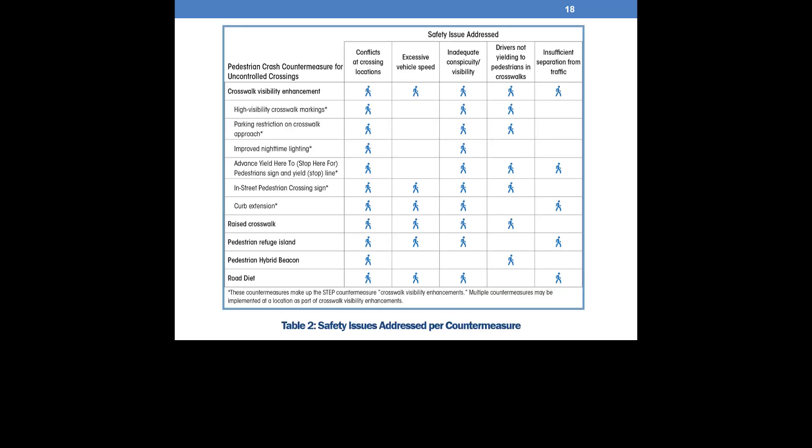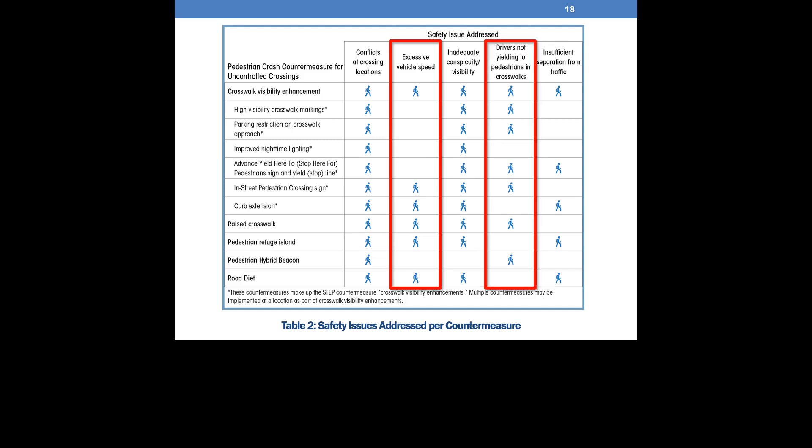Table 2 helps you find potential countermeasures based on the specific safety issues at the uncontrolled crossing. To use the table, find the safety issue you would like to address at the top of the table. Issues include conflicts at crossing locations, excessive vehicle speed, inadequate visibility or conspicuity, drivers not yielding to pedestrians and crosswalks, and insufficient separation from traffic. Each cell with the pedestrian icon beneath the safety issue corresponds to a countermeasure listed on the left that addresses that issue. To address multiple safety issues, find the rows where both issue cells have icons. For example, if you have identified excessive vehicle speed and drivers not yielding to pedestrians and crosswalks as safety issues, you would want to consider crosswalk visibility enhancements, in-street pedestrian crossing signs, and/or a raised crosswalk.